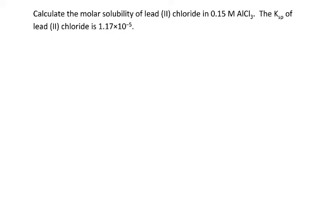The difference is, when I built my KSP table on the first problem, because I had pure water, the initial concentrations of lead and chloride were zero. In this case, since my solution already contains chloride ions, the initial concentration of Cl⁻ is not going to be zero. But other than that, the problem works exactly the same way.